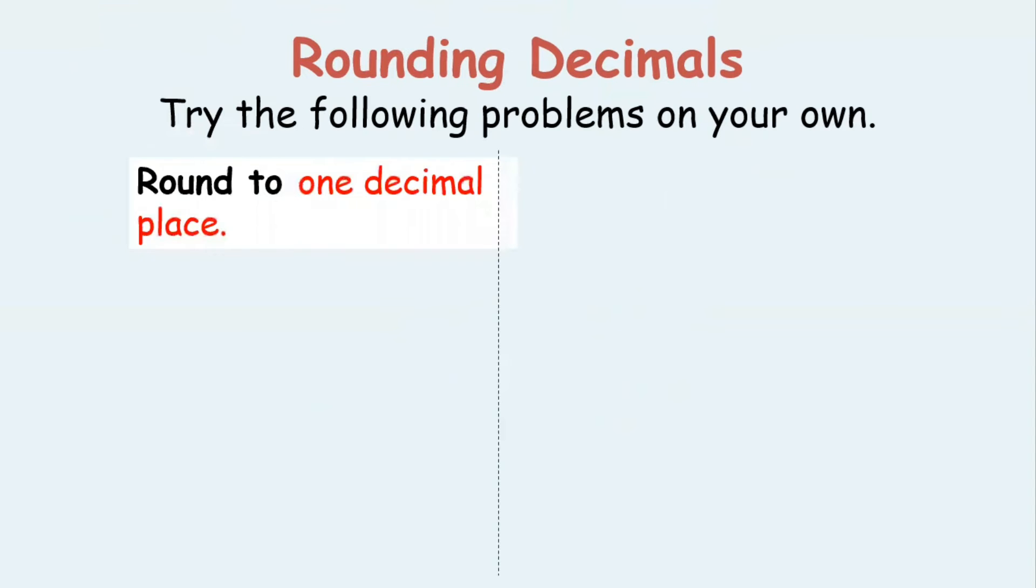Let's take one question. Try the following problems on your own. This is one question for you. Round to one decimal place: 3.478. Try yourself. To one decimal place.